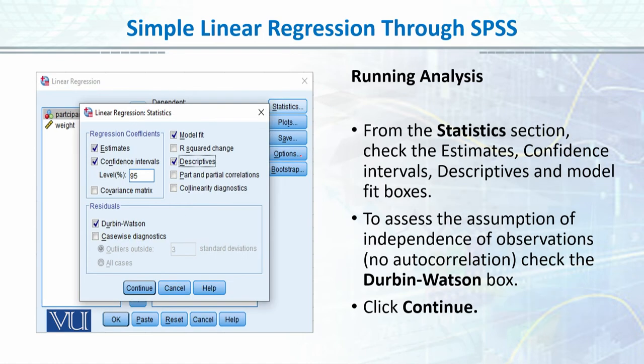We checked the descriptives by default and we checked the Durbin-Watson, so that we know about autocorrelations — or we know that our residual is constant.